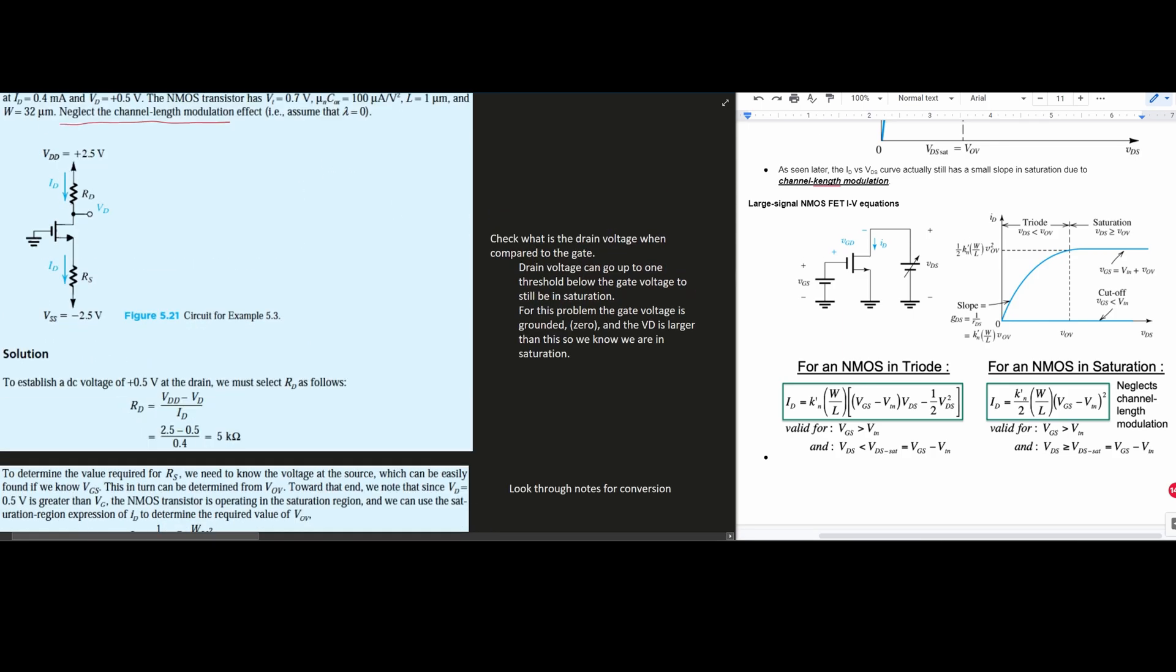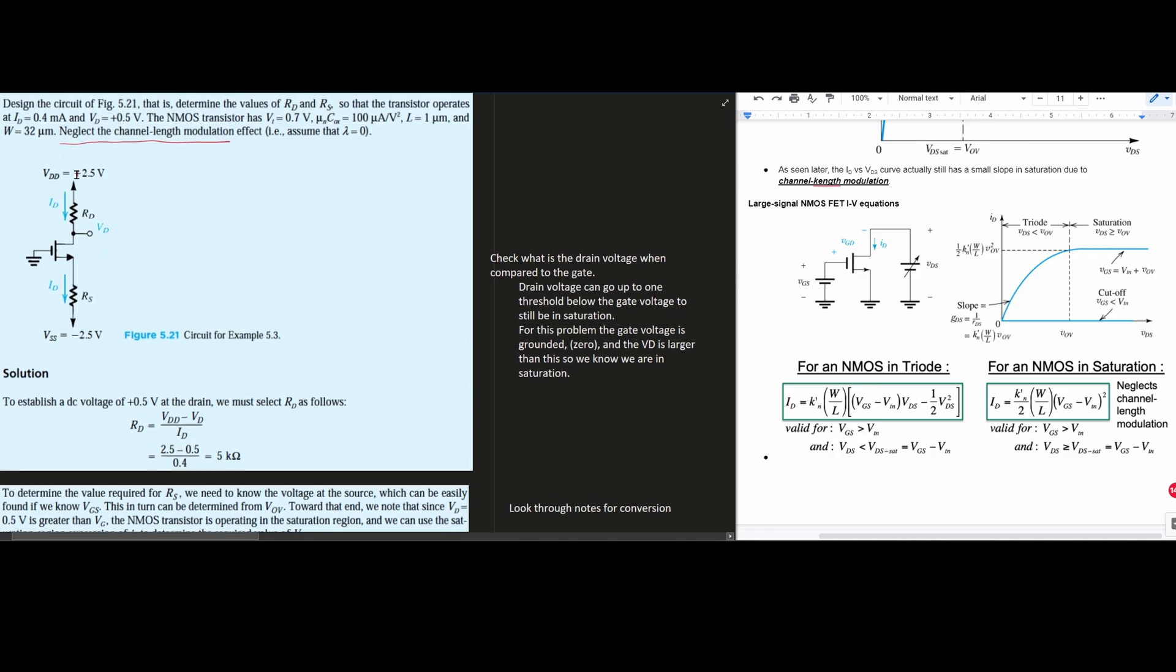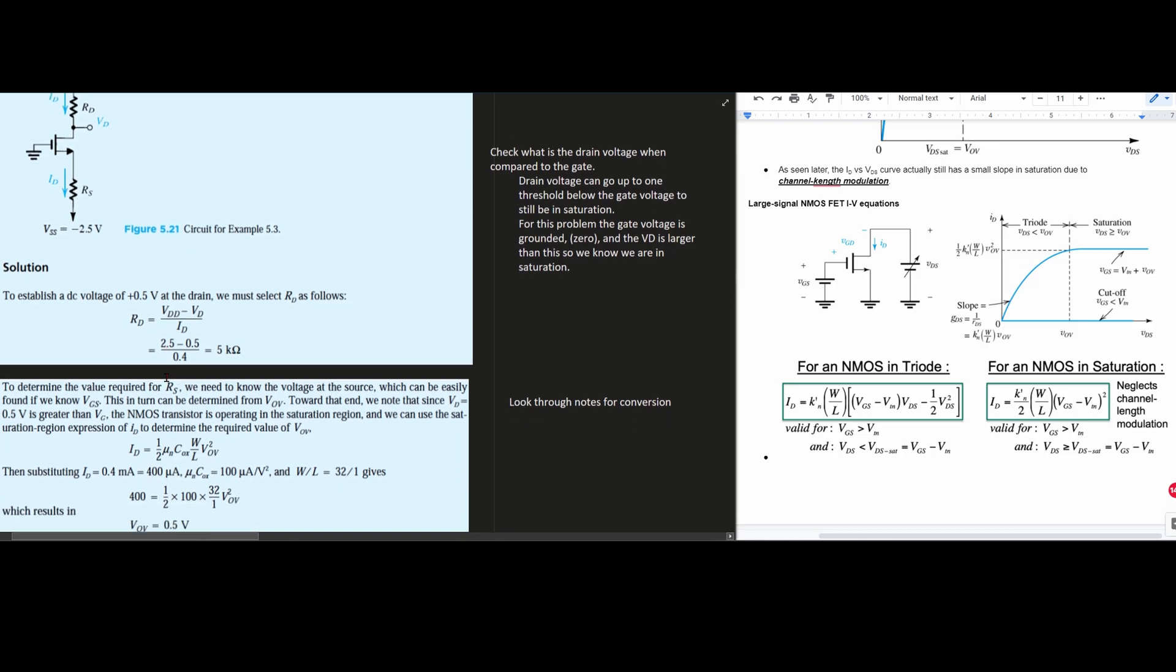To solve for this we're going to take our RD and set it equal to VDD minus voltage D over ID. So RD equals VDD which is 2.5 volts minus VD which was given as 0.5, divided by current ID which was 0.4 milliamps. When we solve for this it's going to be 5 kilo ohms of resistance for RD.